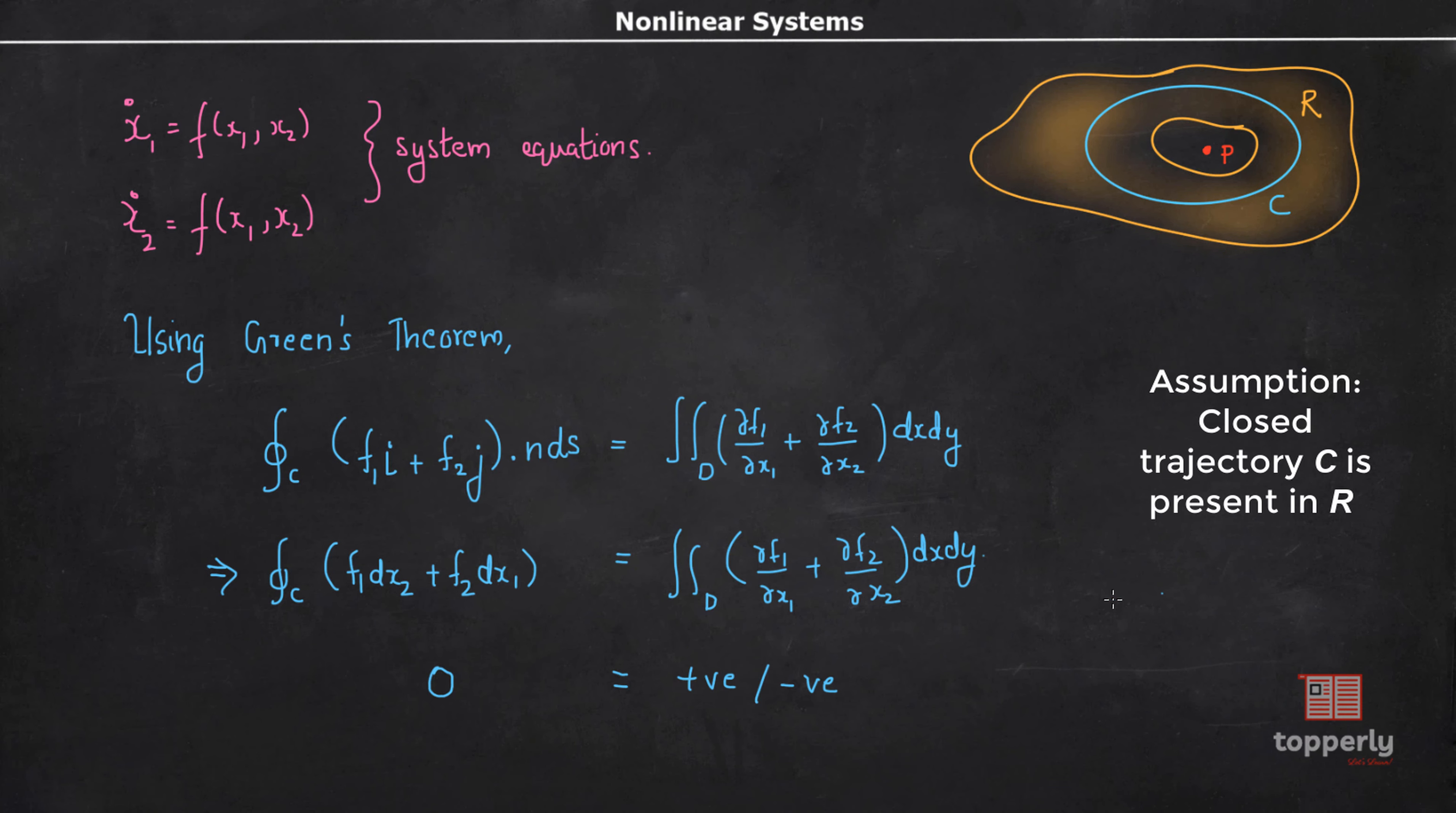Now let's see an example to familiarize this criterion. Consider a system represented by the differential equation d²y/dt² minus (b - 10/3(dy/dt)²)dy/dt plus y plus y² equals zero. Writing down the state equations: x₁ dot equals x₂ and x₂ dot equals (b - 10/3 x₂²)x₂ minus x₁ minus x₁².